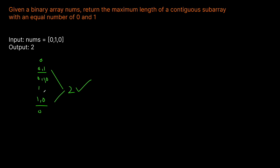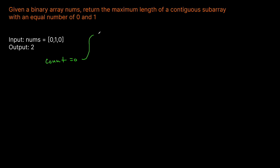So how can we solve this problem in the most efficient manner? We want to realize that we're interested in the count of zeros and ones in a subarray. We're going to have a count variable which represents the balance between the ones and the zeros. We start at zero, and anytime we see a one we increment count by one, and if we see a zero we decrement count by one.